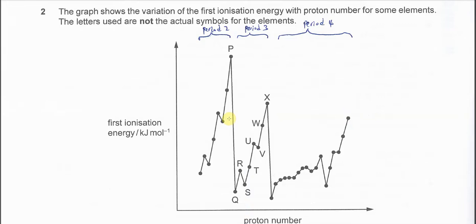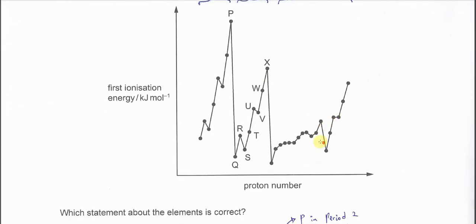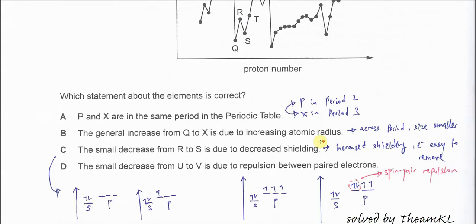Question 2. The graph shows the first ionization energy of period 2, 3, and 4. So this is period 2, this is period 3 the trend, and this is period 4 the IE trend. And from here, let's choose the correct answer.